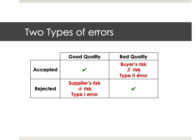And it's actually two very different types of risks. If it's bad quality and we accept it, that's the buyer's risk — often called beta risk, or what statisticians would call a type 2 error. And if it's good quality and we reject it, that's a risk for the supplier, also called the supplier's risk or alpha risk.